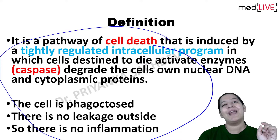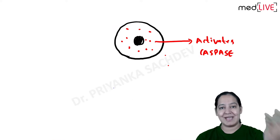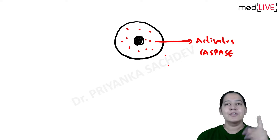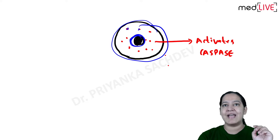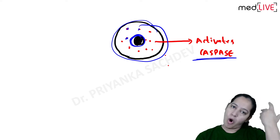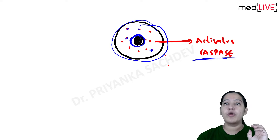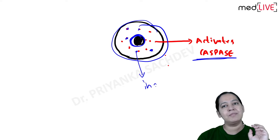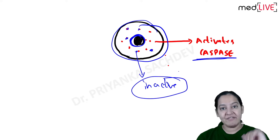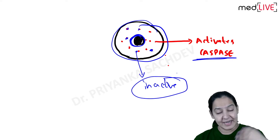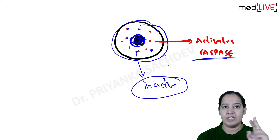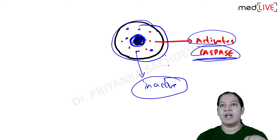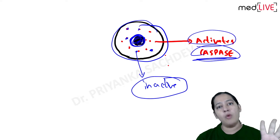Let me simplify the definition. Look at this sketch diagram. This is a cell, this is the nucleus, and in the cytoplasm various enzymes are present known as caspase. In all cells of our body these caspase are present, but normally they are inactive. Whenever that cell is designated to die - either it has performed its function or its DNA is damaged - the cell is destined to die.